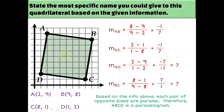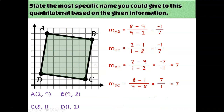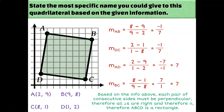So I've shown that this is at least a parallelogram because each pair of opposite sides have equal slopes. But more than that, I've also shown that consecutive sides have opposite reciprocal slopes (−1/7 and 7), which means all four angles have to be right angles. Since all right angles are congruent, this has to be a rectangle.